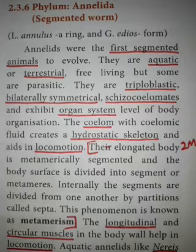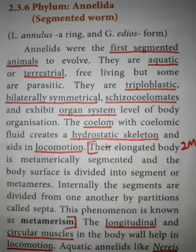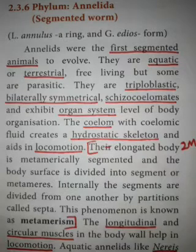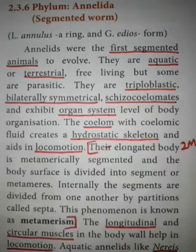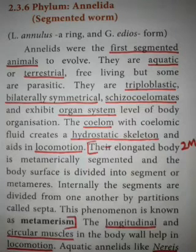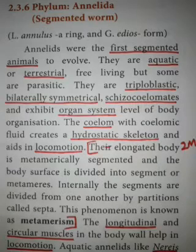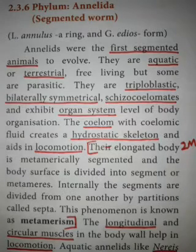The phylum Annelida comprises the segmented worms. You have seen worms like the earthworm, Nereis, leech, and all that. You can see there will be ring-like structures on their body surface — that is the annulus. In Latin, annulus means ring; in Greek, idios means form. As they have ring-like structures on their body, we call it Annelida.